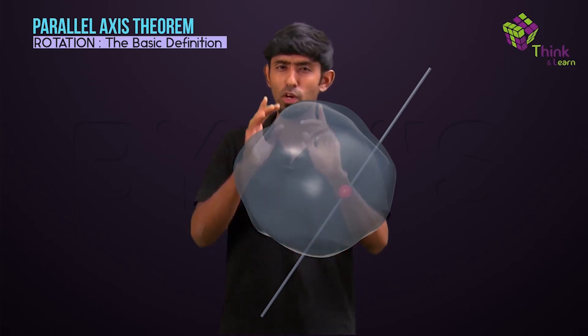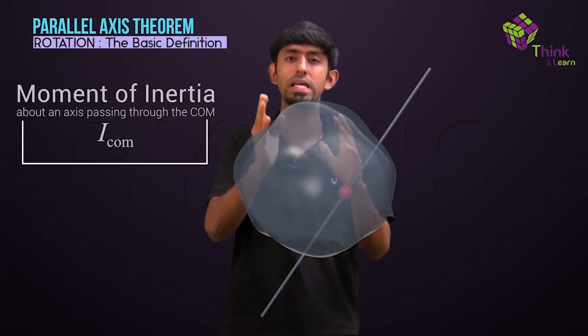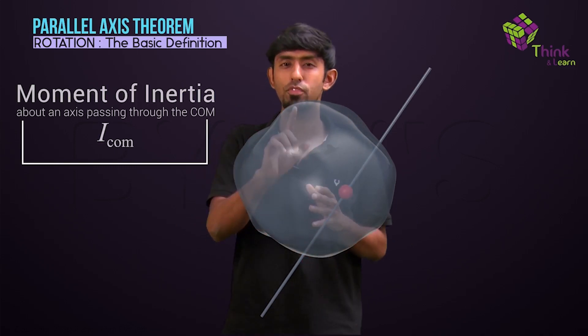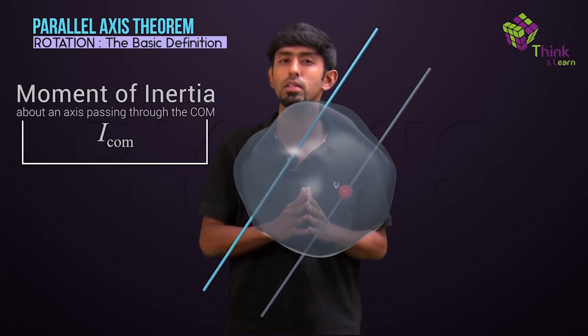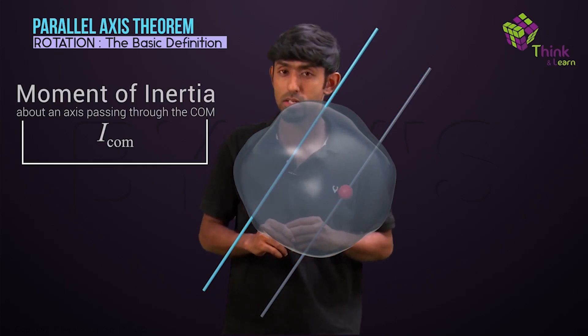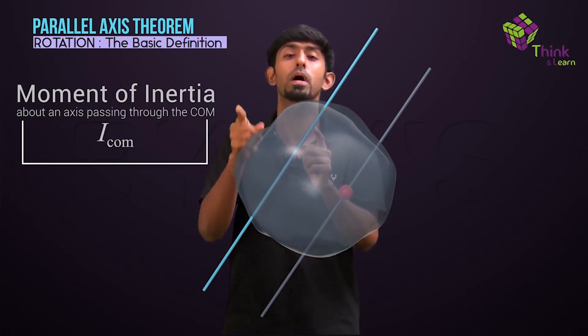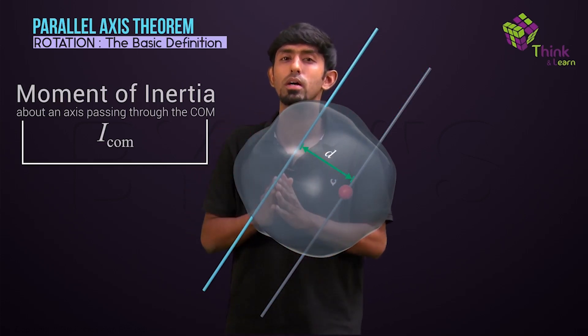Once more where the center of mass shows it's the boss, right? If I know the moment of inertia about that, let me call it ICM, then the claim of the parallel axis theorem, which is what this is called, is that if I have any other axis that is parallel to this axis which is passing through the center of mass, and if that parallel axis is at a distance D from this axis...